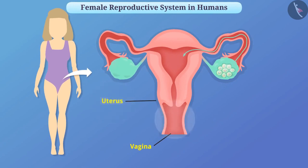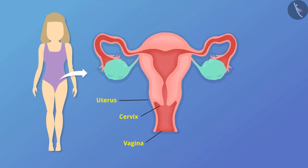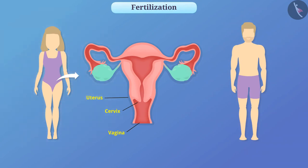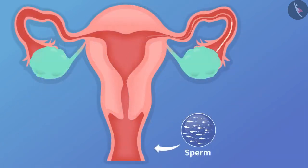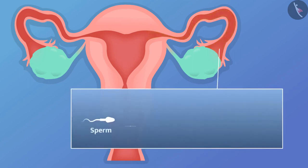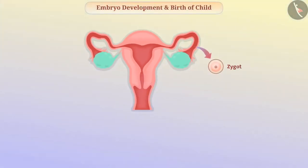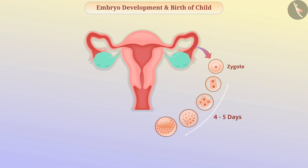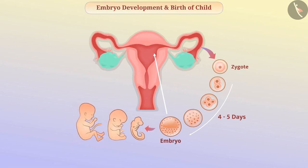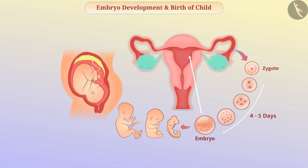The egg is carried by the fallopian tube into an elastic bag-like structure called the uterus. The uterus and the vagina are attached to the cylinder-shaped cervix. At the time of sexual intercourse between human males and human females, sperm are transported from the male's body to the vagina. The sperm reach up to the oviduct by moving upward. In the fallopian tube, fusion of sperm and egg cell may occur — we call it fertilization. This produces a fertilized egg which is called a zygote. The zygote divides several times and in 4 to 5 days it forms a ball-like structure called an embryo. This embryo attaches to the uterine wall where it develops. A disc-like structure is developed in the wall of the uterus which is called the placenta. The placenta is attached to the embryo by the umbilical cord.